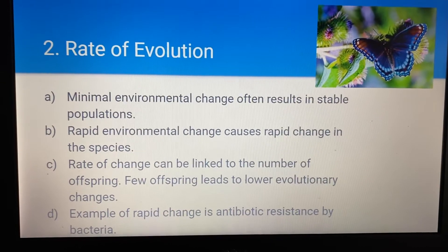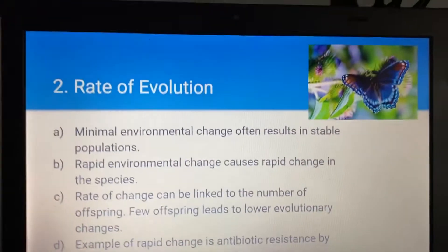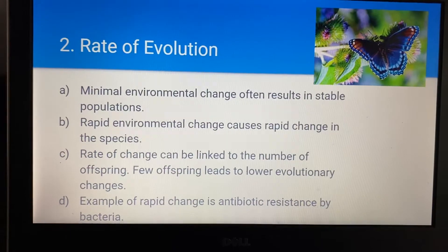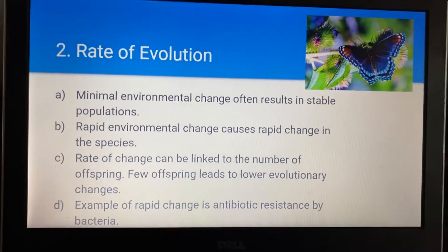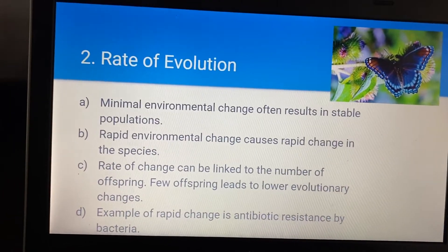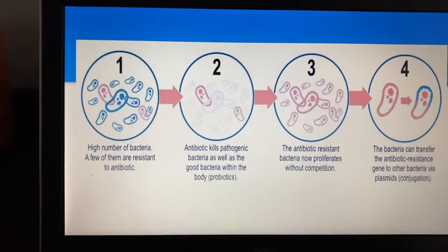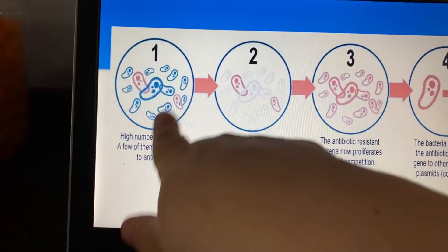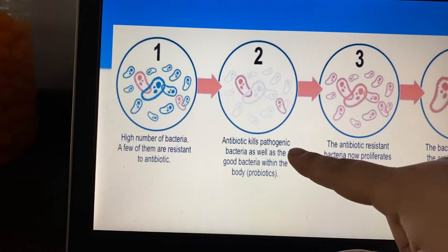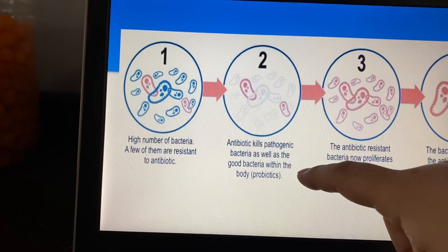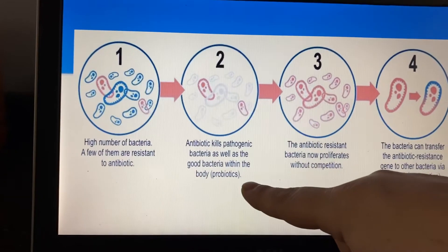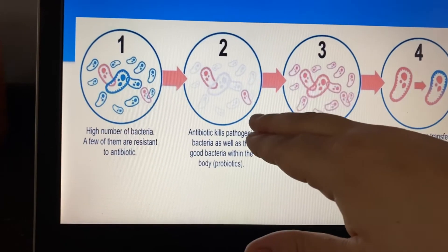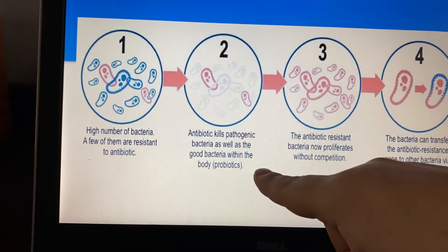Another example of rapid change is antibiotic resistance by bacteria. When you go to the doctor and you have a cold, they're not going to give you an antibiotic, because the more antibiotics you take, the more immune your body becomes to them and they won't work. So they try not to prescribe antibiotics for viral infections, because antibiotics will not help. Here is a chart: a high number of bacteria, and a few of them — the pink ones — are resistant to the antibiotic. The antibiotic kills pathogenic bacteria as well as good bacteria. Good bacteria is called probiotics, and when you're sick and on antibiotics, this is why it can cause nausea or diarrhea — it's disrupting that good bacteria in your intestine, which helps break down food.